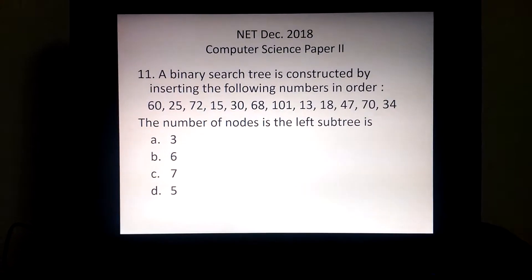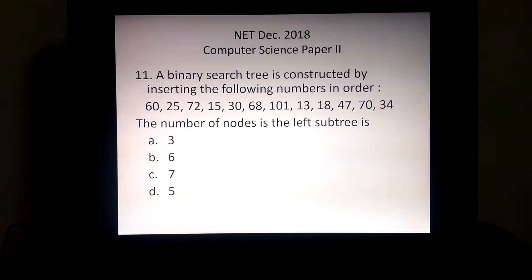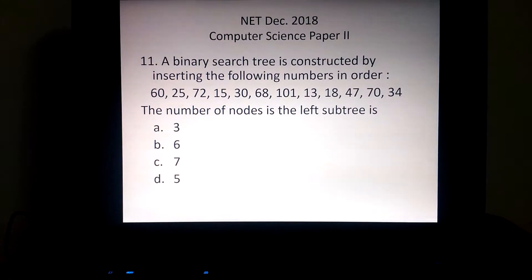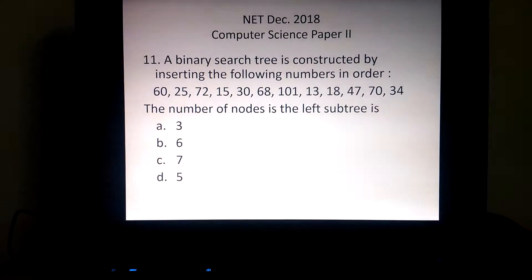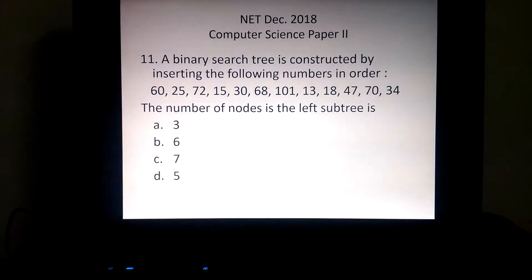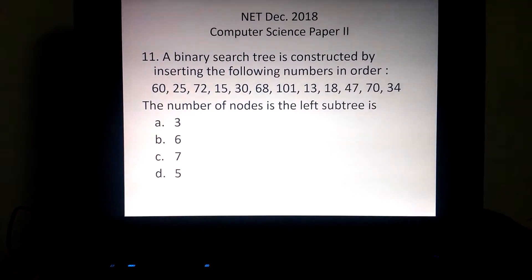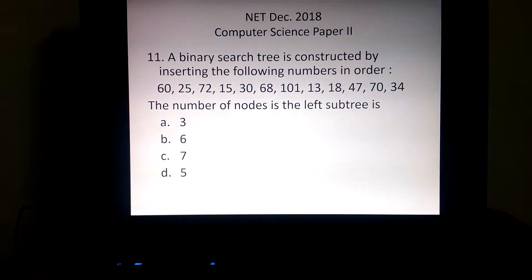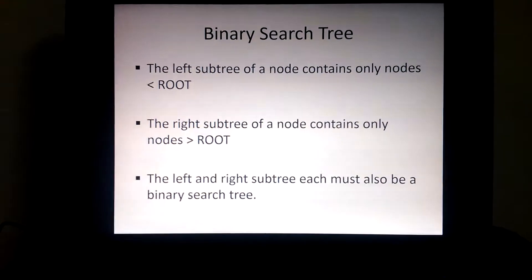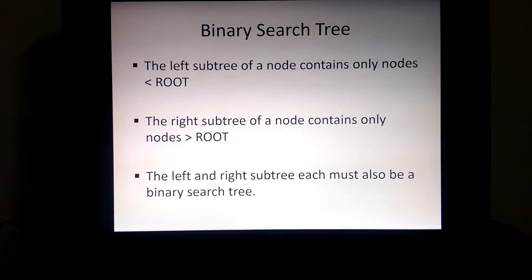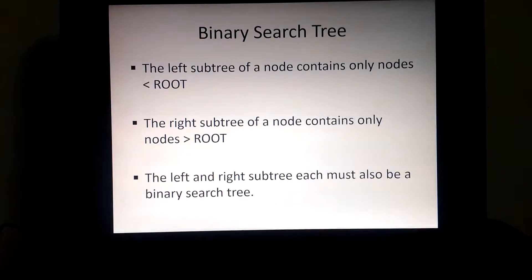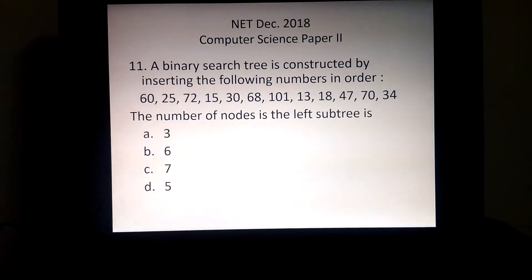To solve this question, we will see what is a binary search tree. A binary search tree is a tree in which every left child has a less value than their parent, and every right child has a greater value than their parent. The left subtree always has less value than the root, the right subtree always has greater value than the root, and each subtree must also be a binary search tree.